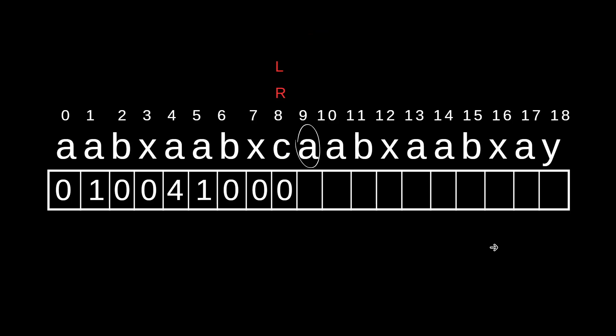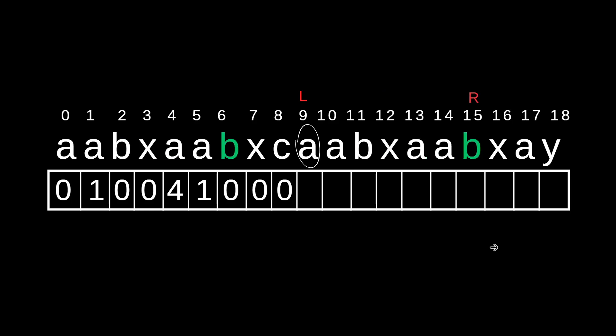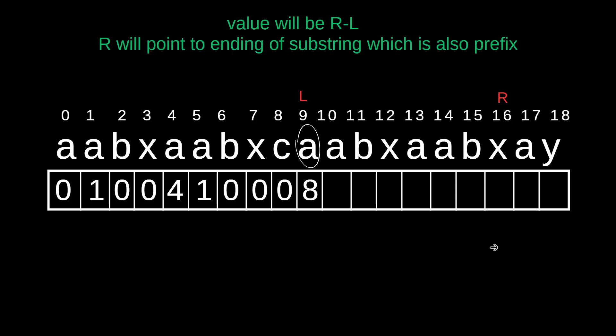As our R is less, we reinitialize. This value and this value are equal. This is also equal, also equal, also equal, also equal, also equal — X and D is also equal. Now this value is not equal. What's the value? 17 minus 9 equals 8. So directly put the value from R minus L, which is 8, and we decrement R.